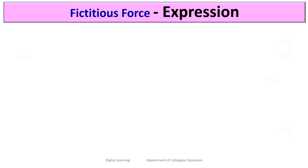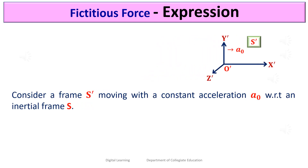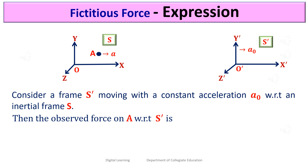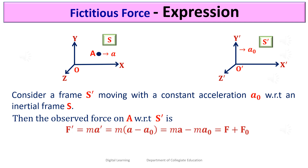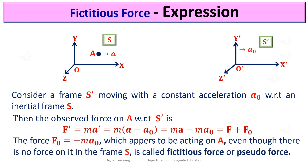A fictitious force is a force that appears to act on every object when the frame of reference is accelerating. To obtain the expression for fictitious force, consider a frame S' moving with constant acceleration A0 with respect to an inertial frame S, and a particle A moving with acceleration A. The observed force on A with respect to S' is F' = M × A' = MA minus MA0 = F plus F0. The force F0 = minus MA0 appears to act on particle A even though there is no force on it in frame S. It is called fictitious force or pseudo force.